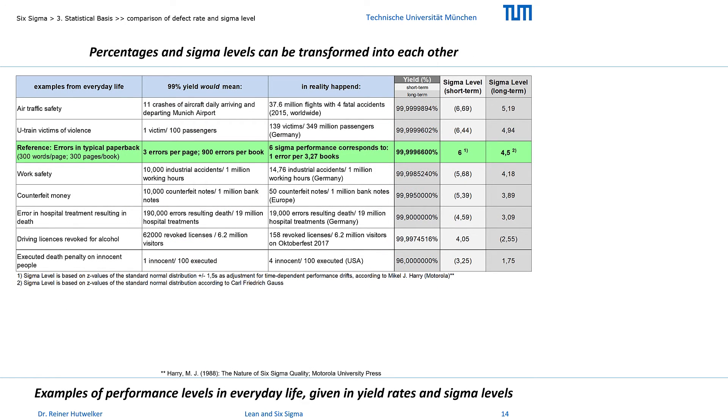To give you an impression of the relative proportions of percentages and sigma levels, I researched the defect rates for a few everyday examples and converted them into sigma levels. However, these are not statements about process capability, as no specification limits are considered. It is only a conversion of percentage values into Z values of the standard normal distribution. And strictly speaking, this is not allowed either, because defect rates are not and cannot be normally distributed. More about this later in the measure phase.